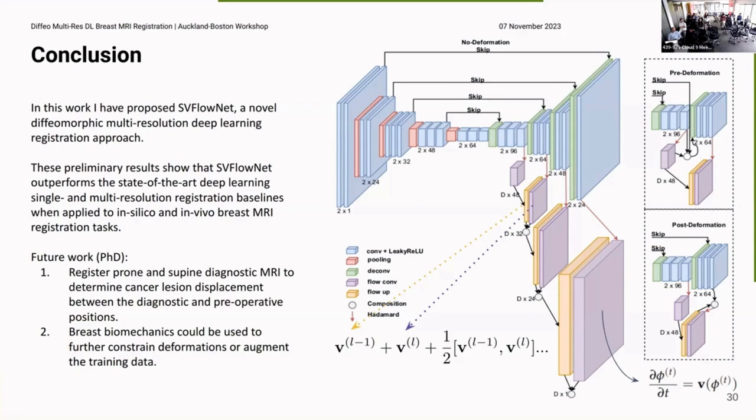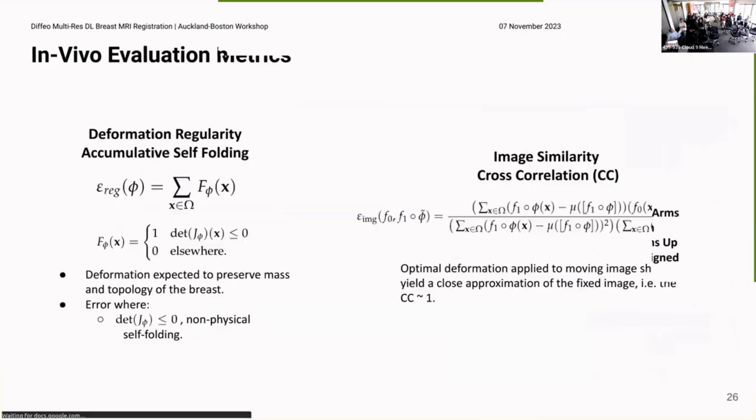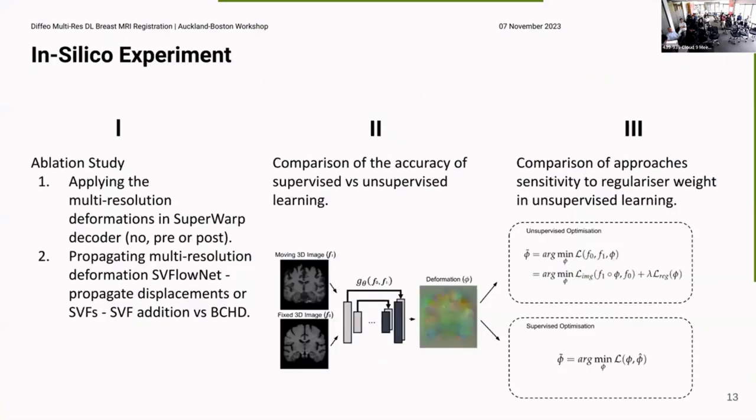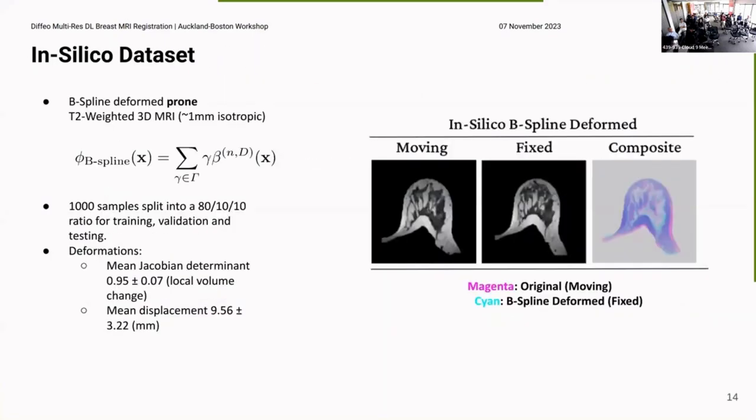I recall right. I think you said your training data, you had a mean displacement of about 10 millimeters or so. What was the range of displacements? So plus or minus 3.2, so it's still fairly small. Did you look to categorize each of the methods against the size of the displacement that you'd applied? No, I haven't looked into that yet, but that's something that I'll be looking into with my PhD, especially because some of the deformations between prone and supine, depending on the size of the breast can be quite large. So that's definitely something that I need to do.